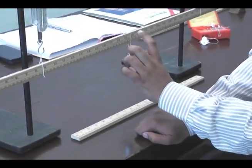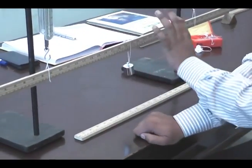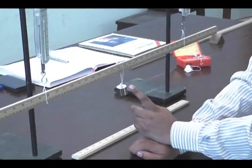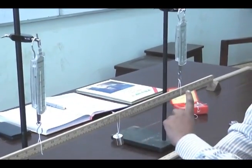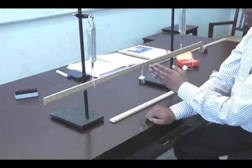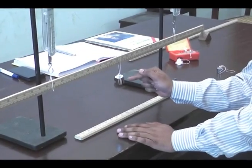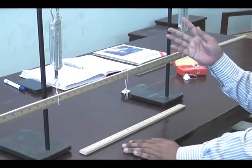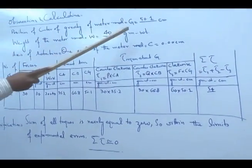For your first observation you can check whether your answer is nearly equal to zero. If your answer is not nearly zero, it means either you are ignoring zero errors present in your spring balances, or your meter rod is not balanced within the tolerance. Here I am taking just the first observation. Similarly you can add some weight and take two, three, four, five, or six readings — in each reading the sum of all torques must be nearly equal to zero within experimental error. The center of gravity of the meter rod was at 50.1 cm.